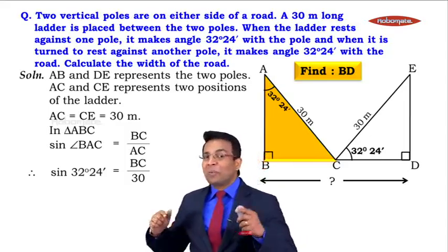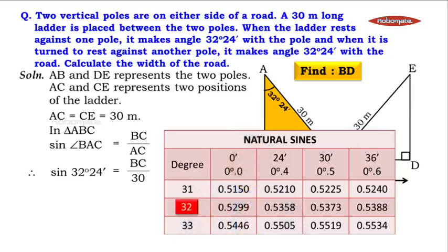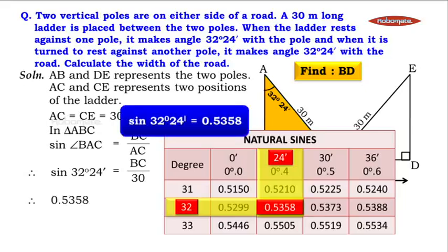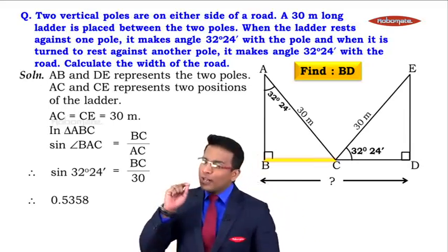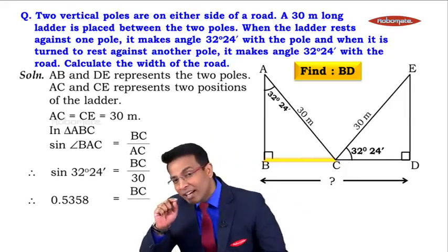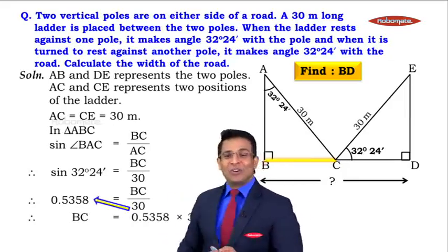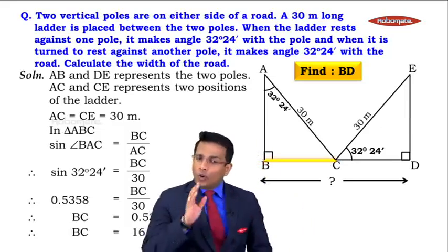We get the value of sin(32° 24') from the table of natural sines. Looking at the row for 32 and the column for 24 minutes, the intersection gives sin(32° 24') = 0.5358. Substituting: 0.5358 = BC / 30, so BC = 0.5358 × 30 = 16.074 meters.